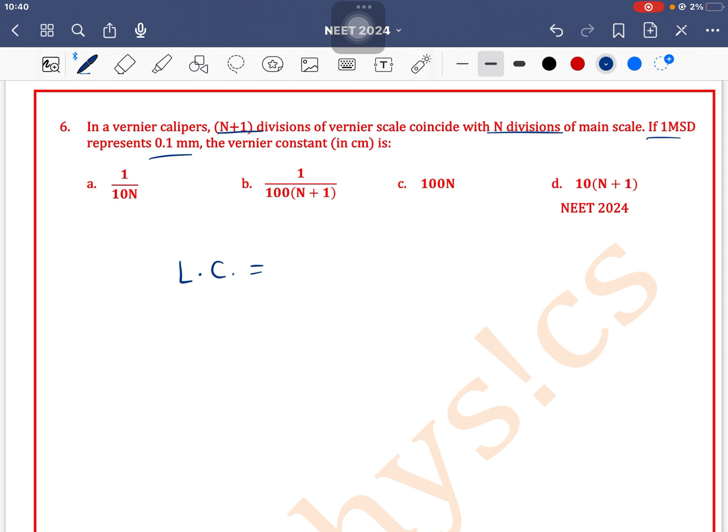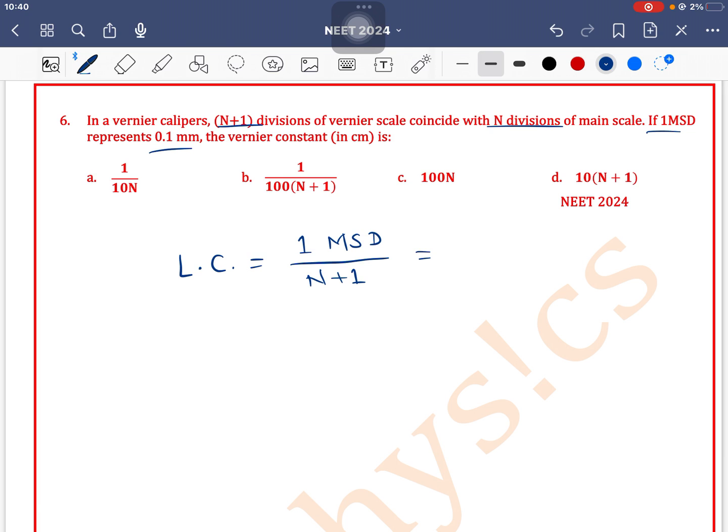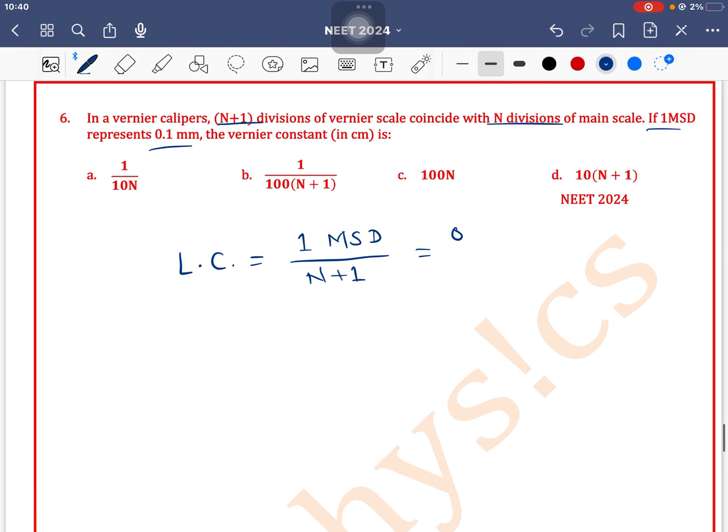Least count formula is 1 MSD divided by N+1. We have the formula here directly. So 1 MSD is given as 0.1 mm divided by N+1.